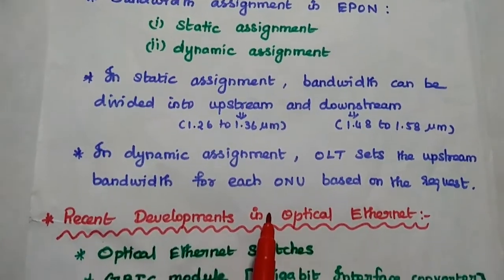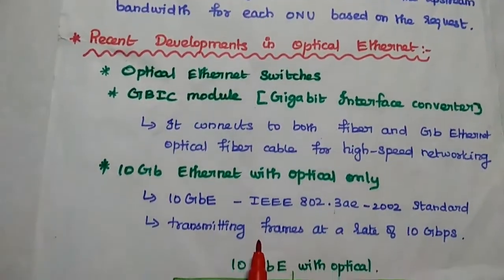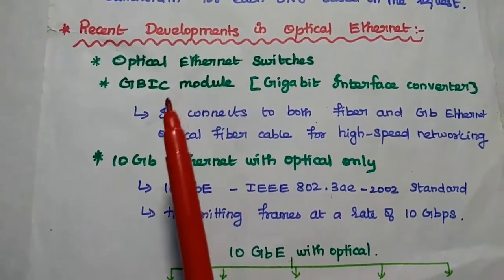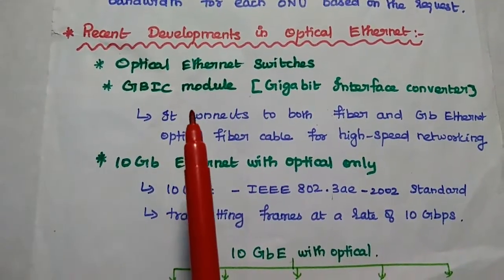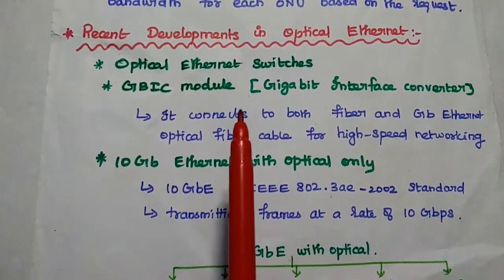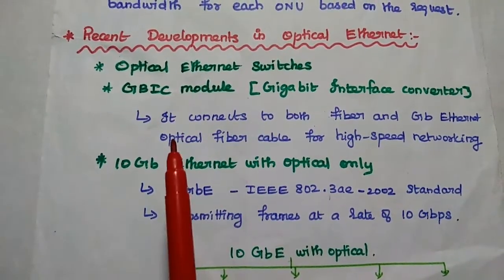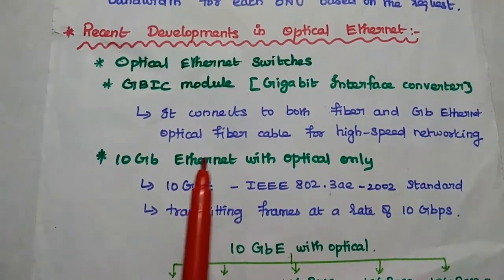This is the efficient method. The next one is recent developments in optical Ethernet. First one is optical Ethernet switches GBIC, that is gigabit interface converter module. It is mainly used to connect both fiber channel and Ethernet cable.